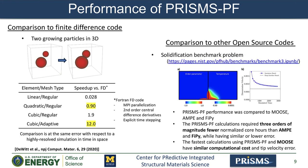Regarding other open source codes, we compared performance between PRISMS-PF, Moose, PhiPy, and AMPE for a 2D simulation of solidification in a pure material — one of the benchmark problems developed at the PFHub community. We found that the PRISMS-PF calculation requires three orders of magnitude fewer normalized core hours than AMPE and PhiPy, while having similar or lower degree of error. The fastest calculation in PRISMS-PF and Moose have similar computational cost and tip velocity error. For this comparison, we only included results uploaded by expert-level users. We are confident that PRISMS-PF is competitive in terms of performance.